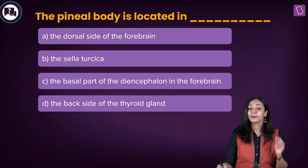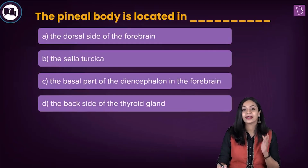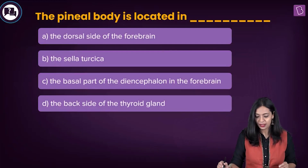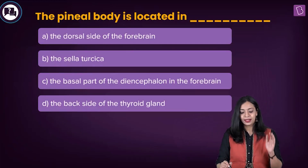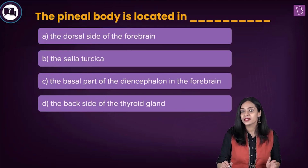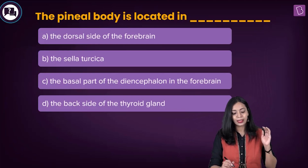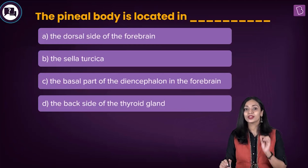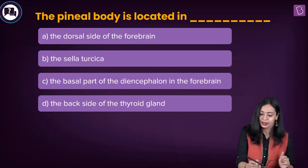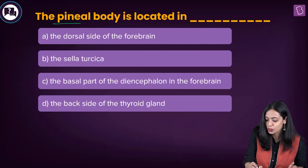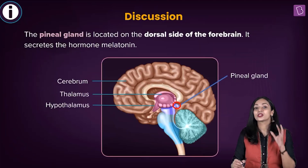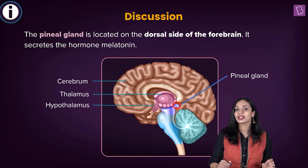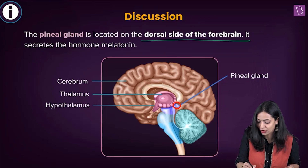Here's the next question: the pineal body is located in what? The options are the dorsal side of the forebrain, the sella turcica, the basal part of the diencephalon in the forebrain, or the back side of the thyroid gland. We are asked to find the location of the pineal gland. The pineal body is also known as the pineal gland, and it is located in our forebrain. More specifically, the pineal gland is located on the dorsal side of the forebrain.